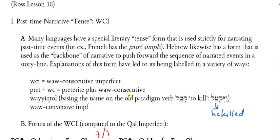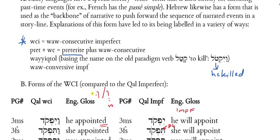I'm happy to acknowledge that WCI is not genuinely an imperfect form — it really is probably an old preterite form that happens to be identical in form to the imperfect most of the time, although sometimes you can tell the difference between the two, and we'll talk about those when we get to them in our studies.